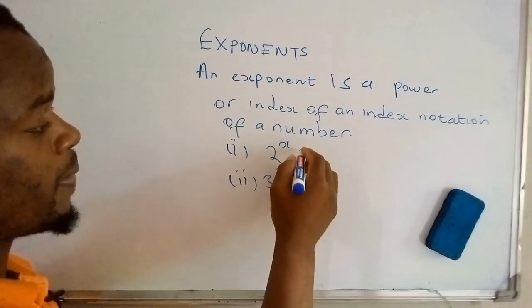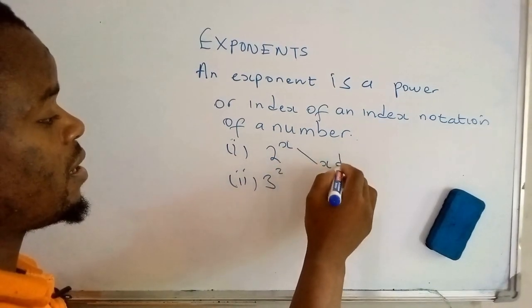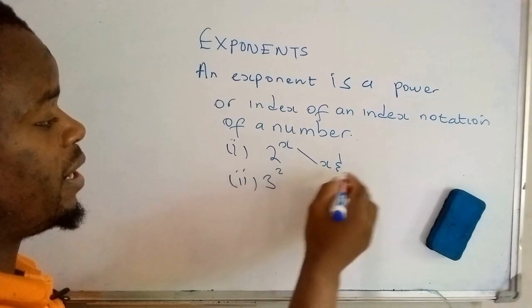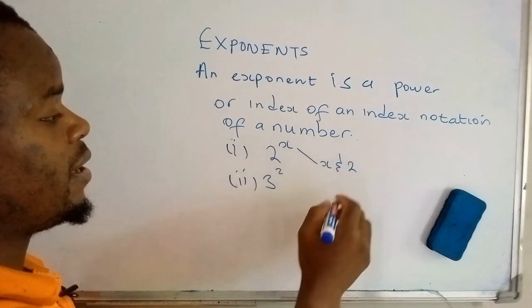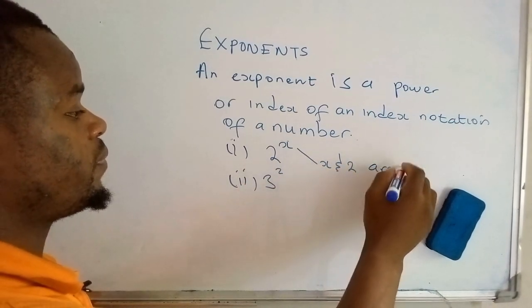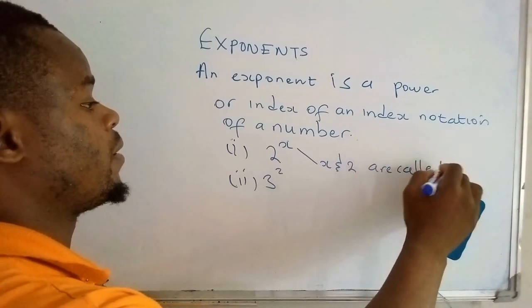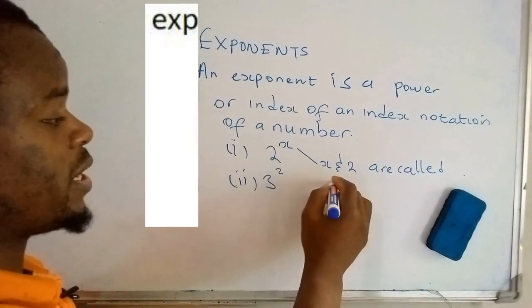What you need to do is, what you need to see is this: this x and these 2 here are called, they are called exponents.